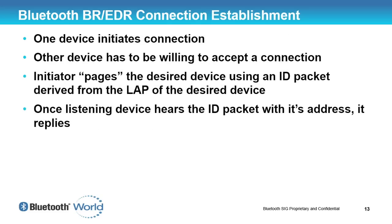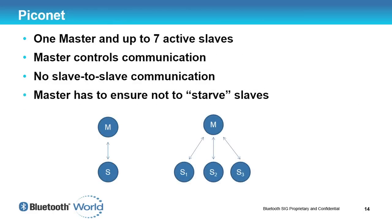In connection establishment, one device initiates the connection and always becomes the master of that connection, while the other device must be willing to accept it. The initiator uses paging to page the other device using an ID packet derived from that device's address, obtained from the inquiry process. Once the device hears that ID packet and replies, you basically have a Piconet — one master and up to seven slaves in Basic Rate.